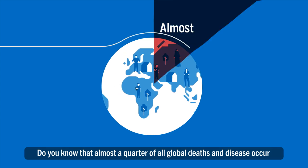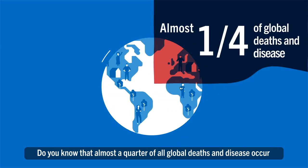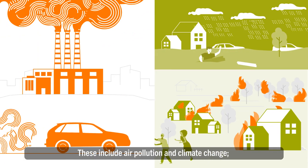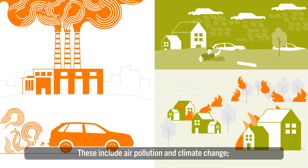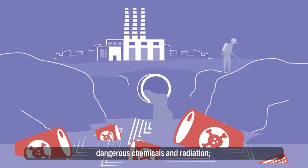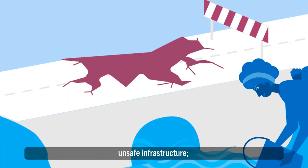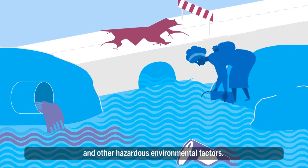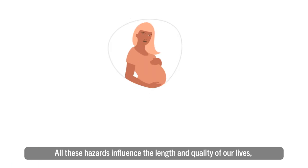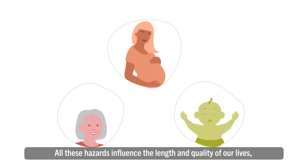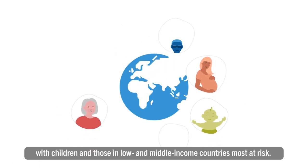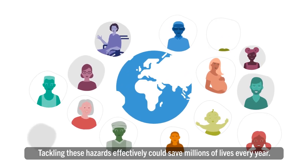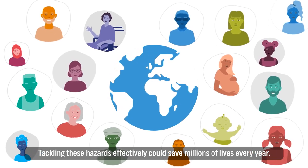Almost a quarter of all global deaths and disease occur due to environmental risk factors. These include air pollution and climate change, dangerous chemicals and radiation, unsafe infrastructure, lack of clean water and sanitation, and other hazardous environmental factors. All these hazards influence the length and quality of our lives, with children and those in low- and middle-income countries most at risk. Tackling these hazards effectively could save millions of lives every year.